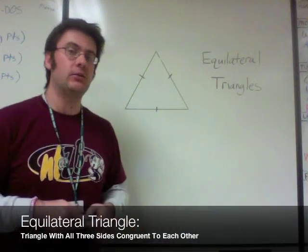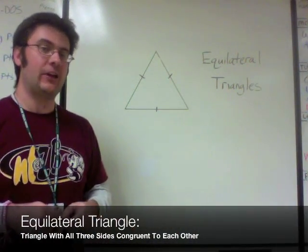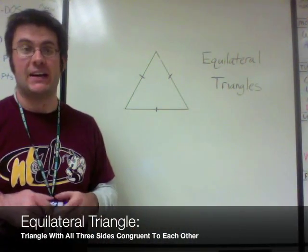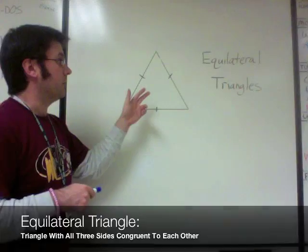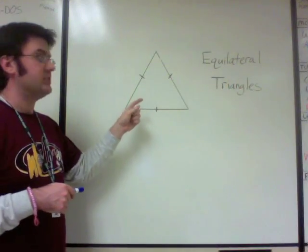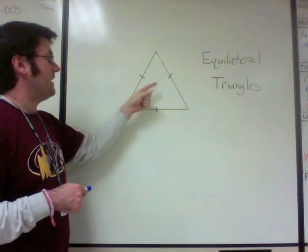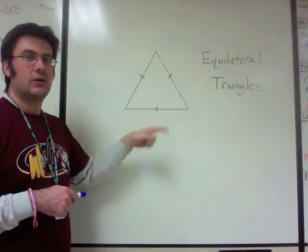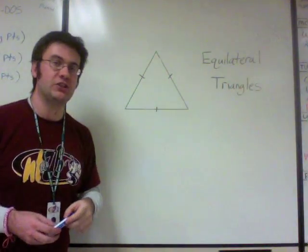An equilateral triangle is simply a triangle with three congruent sides. So if we look at our diagram here, we can see that this side, this side, and this side are all congruent to each other.